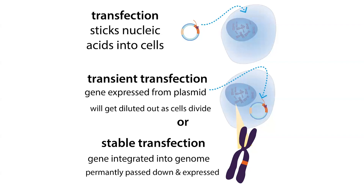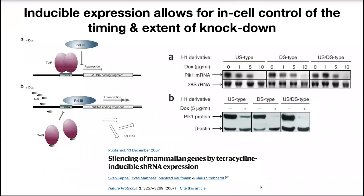With stable transfection, you can use the selection strategy to select for cells that have stably integrated the gene — but you're not using antibiotics prophylactically, you're using them for selection. There are also times antibiotics are used to induce gene expression, such as with the TET-inducible promoter system, where cells make a TET repressor protein with its binding site placed in front of the gene you want to control. In the TET-on system, adding doxycycline or another tetracycline antibiotic causes the TET repressor to fall off, allowing your gene to be expressed. Again, this is not prophylactic use — it's using antibiotics to actually manipulate the system.